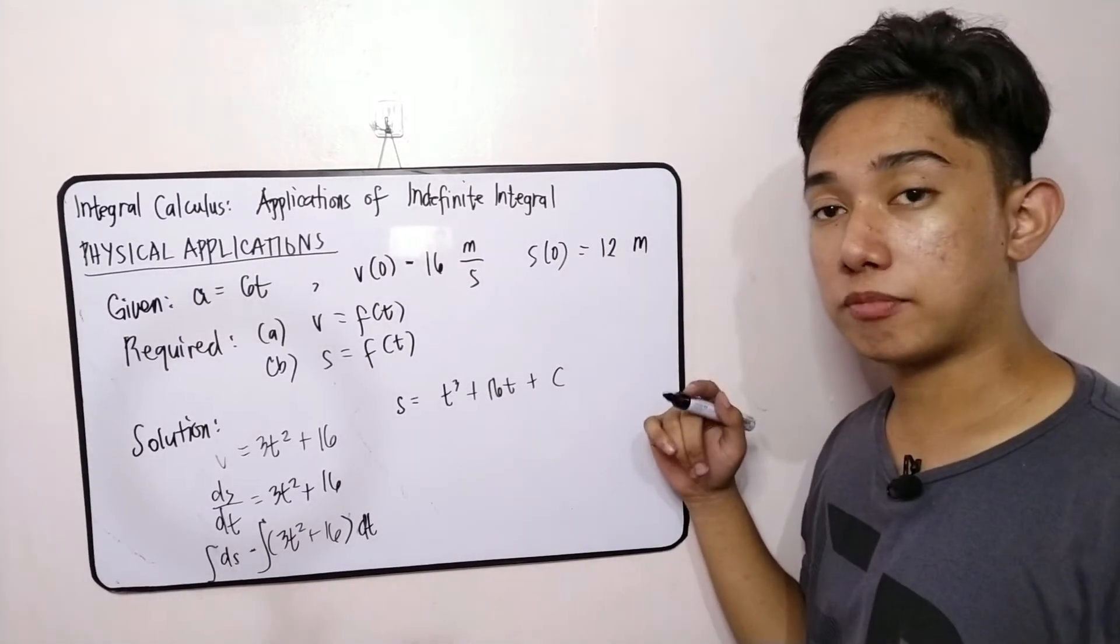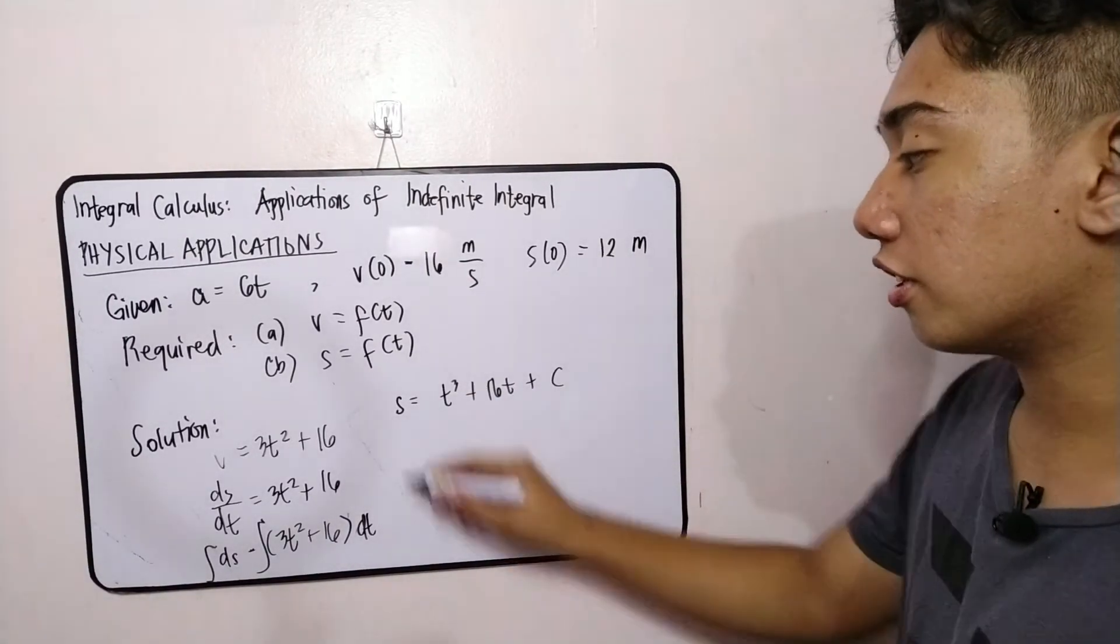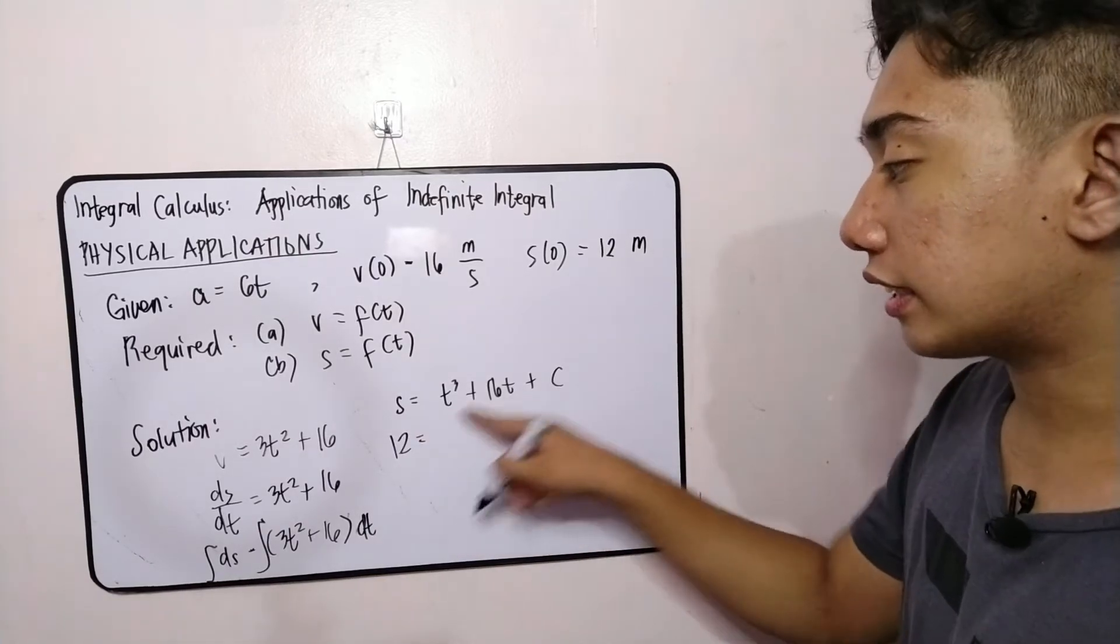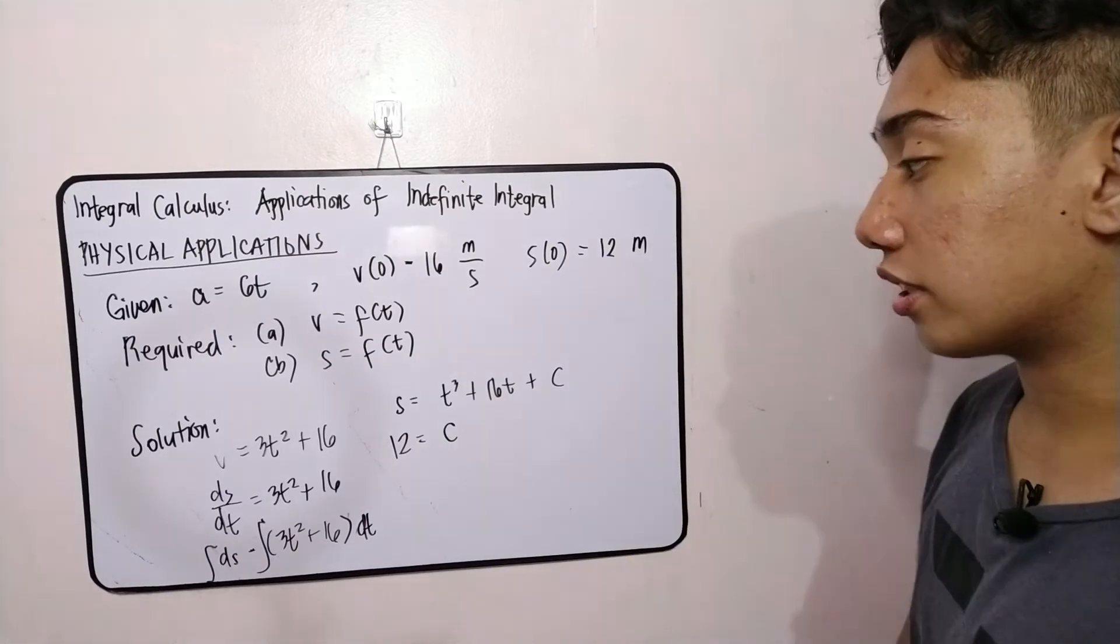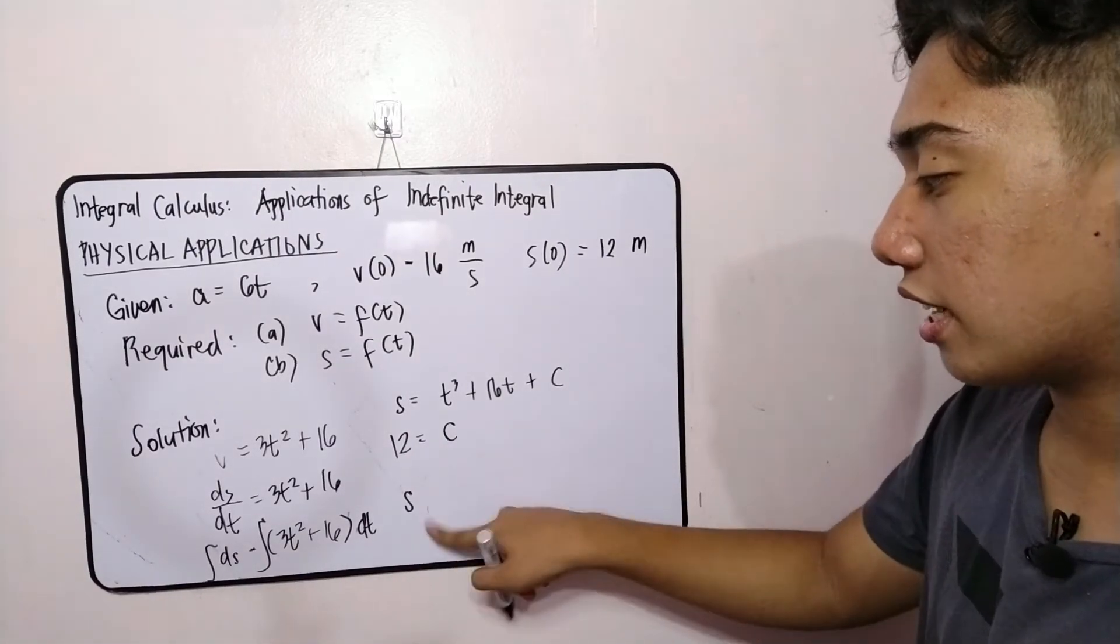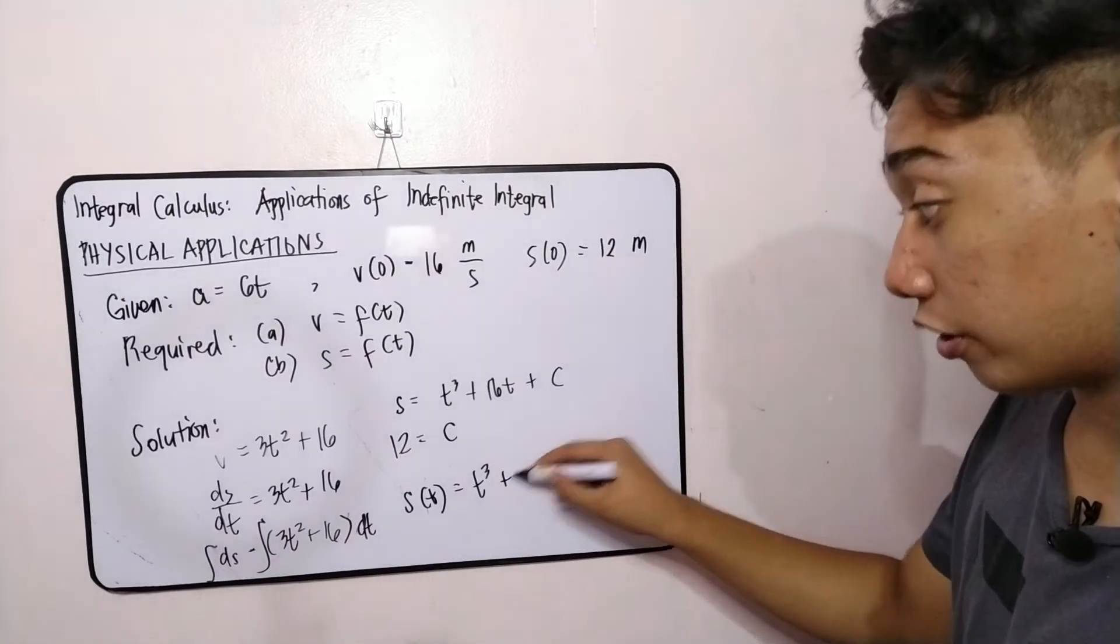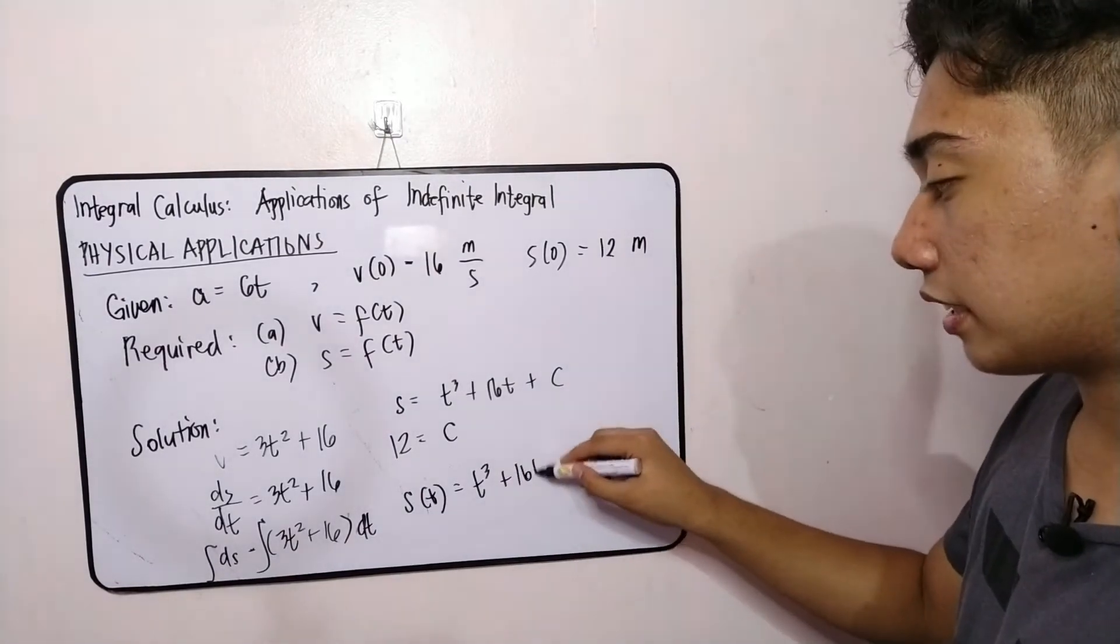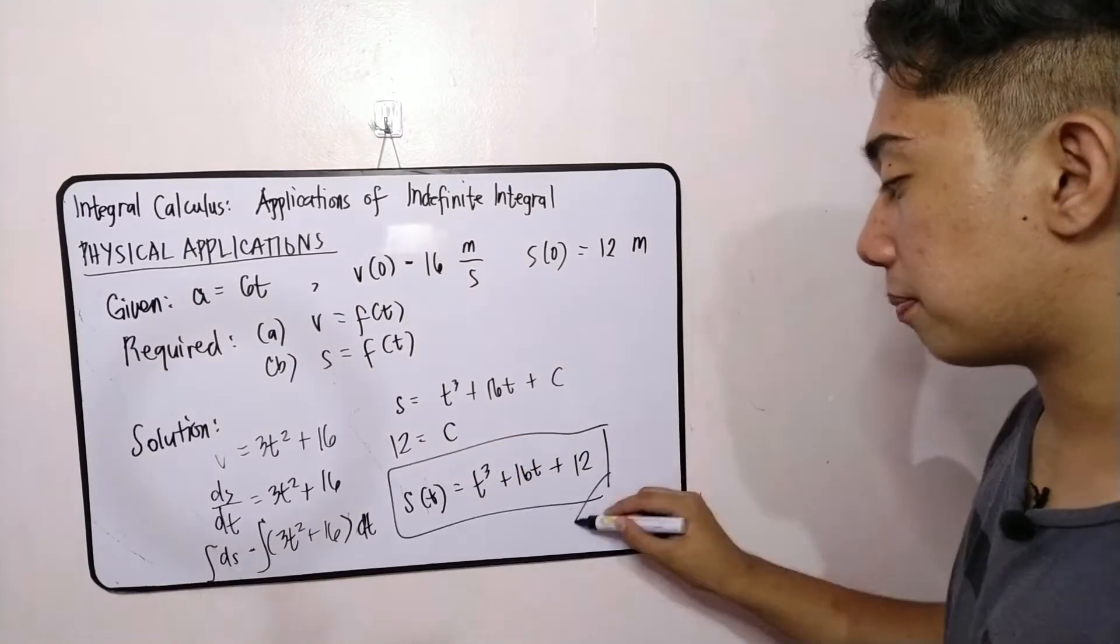This will result us into s is equal to t cubed plus 16t plus c. And we have the initial condition of at rest, your displacement will be 12 meters. So we will substitute 0 at t and 12 at s. So this becomes 12. This is cancelled. This is cancelled. So the remaining letter is c. So our constant is 12. Therefore, the displacement function is s of t is equal to t cubed plus 16t plus 12. Therefore, this is our displacement function.